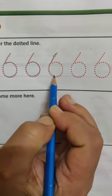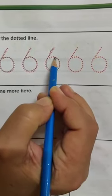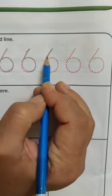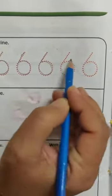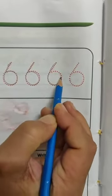Slowly, slowly, slowly you have to write on these dotted lines like this. 6. What is this? 6.